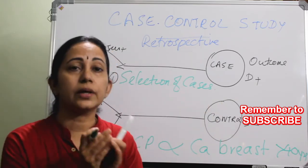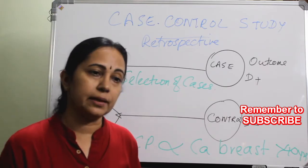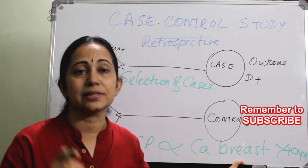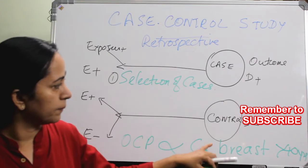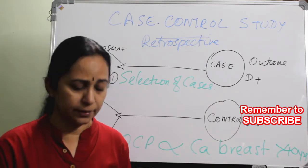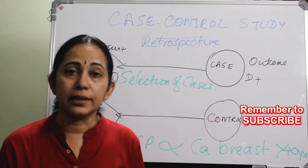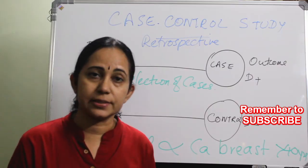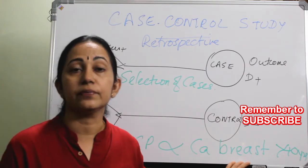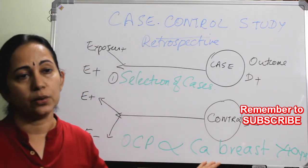Otherwise there will be a chance of selection bias, because the outcome has already occurred. So if you are not very clear in your definition of CA breast, there is a chance of selection bias. And from where will you get these cases? It can be either from the hospital registry, from your clinics or OPDs. Or you can go to the population — if there is a population-based cancer registry, you can get the cases from there also.